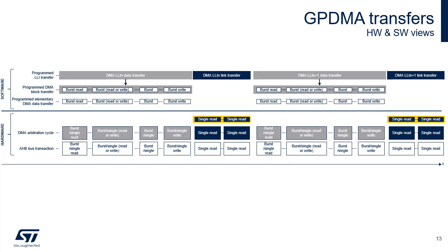This timing diagram highlights the relationship between the software configuration of a channel and the transactions that are generated on the AHB master port. An ongoing GPDMA transfer can be a data transfer, which includes source and destination burst transfers, or a link transfer for the internal update of the linked list register file from the next linked list item. Two consecutive LLIs are represented: first LLI number N, then LLI number N plus 1. The data transfer is composed of a series of burst data reads followed by burst data writes, because the GPDMA supports FIFO. The GPDMA may modify and shorten bursts into singles or bursts of lower length, as explained in the previous slides.